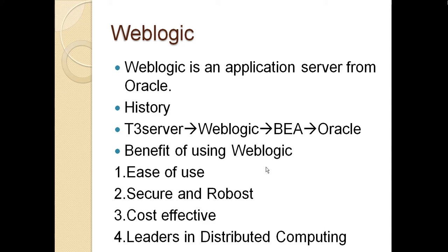The development of WebLogic began around 1991 when a company named T3 Servers started its development. WebLogic was earlier known as T3 Servers. Then a company named WebLogic acquired T3 Servers and renamed it as WebLogic. After that, BEA acquired WebLogic and renamed it as BEA WebLogic, and then Oracle acquired it — it is now known as Oracle WebLogic Server.